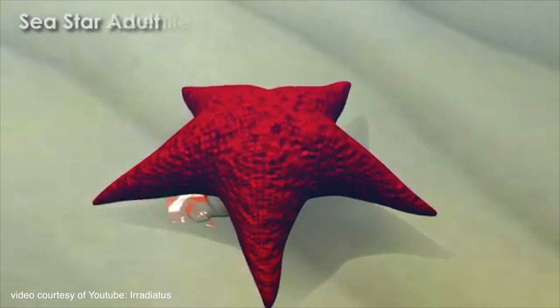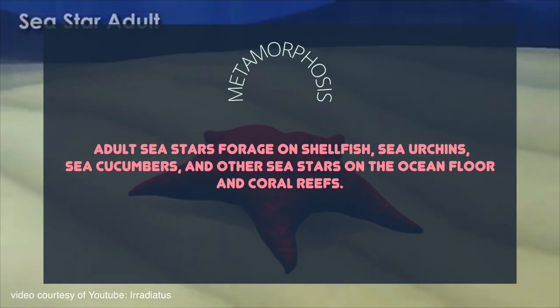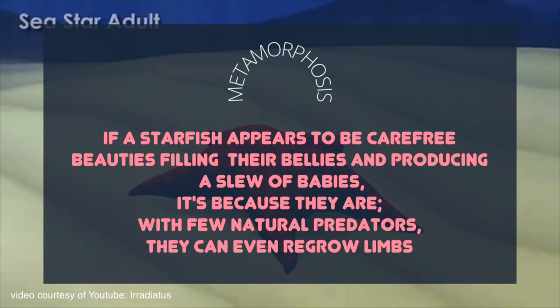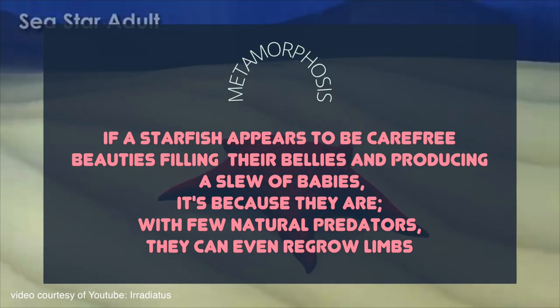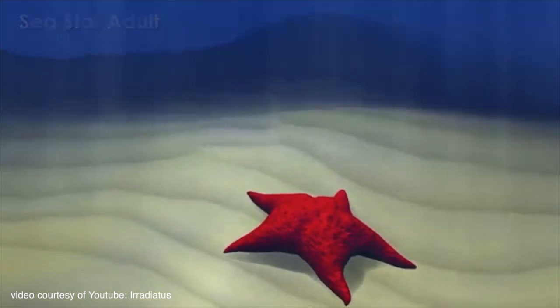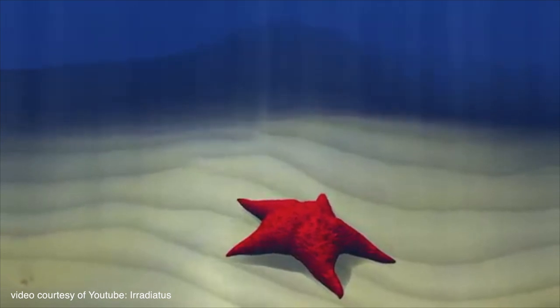Adult calcified sea stars are not particularly tasty to most marine animals, but juvenile starfish are occasionally eaten by whales, fish, and even other sea stars. In the adult phase, adult sea stars forage on shellfish, sea urchins, sea cucumbers, and other sea stars on the ocean floor and coral reefs. With few natural predators, they can even regrow limbs. Furthermore, some species have the ability to regrow a completely new body from a single severed arm. And that is the process through which a bipinnaria larva metamorphoses into an adult sea star.